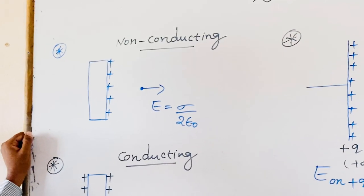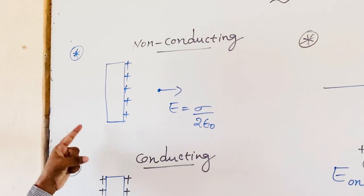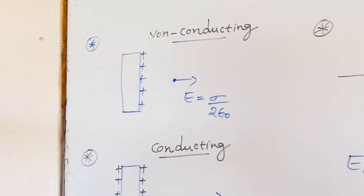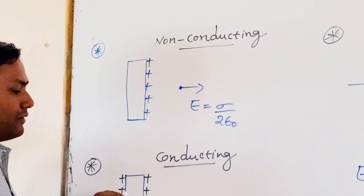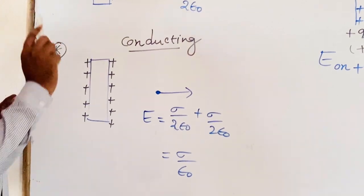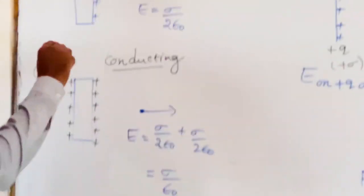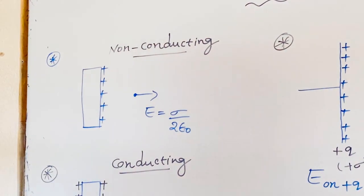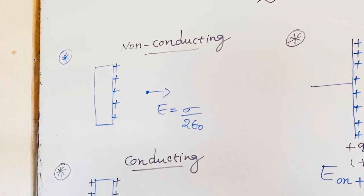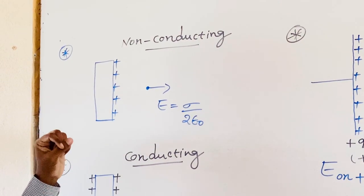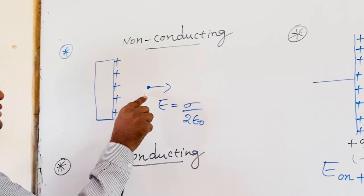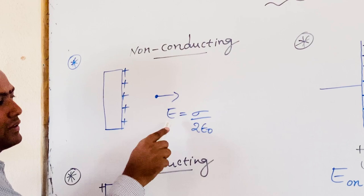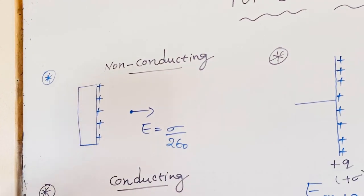In Gauss's Law, we have proved two results. This is the proof for the electric field due to a non-conducting sheet of charge. Suppose you give some excess charge to the non-conducting sheet of charge as shown in the figure. If you concentrate on some point at a distance from it, the electric field is equal to sigma by 2 epsilon naught.